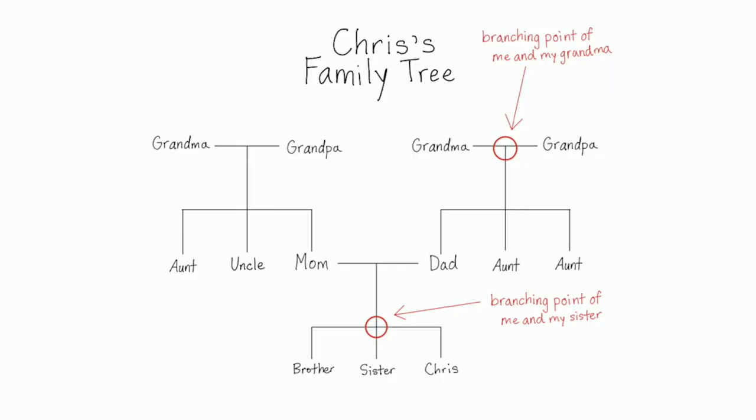You can also think of phylogenetic trees as similar to family trees. The closer the branching point between two or more branches, the more closely related the organisms at those branches are. The branching point of me and my sister is closer than the branching point of me and my grandma — me and my sister are much more closely related. This is also how scientists read and make their own phylogenetic trees.